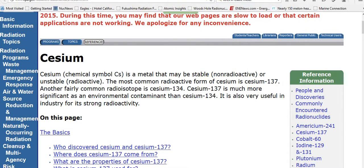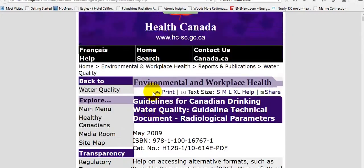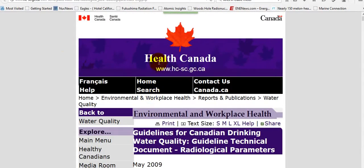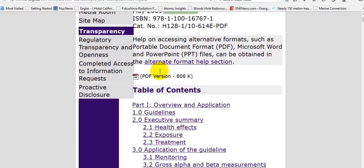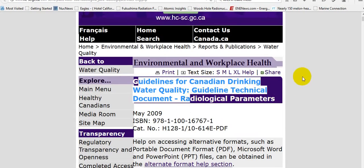This is extraordinary, folks. Trust me, stay with me. Trace cesium detected by levels far below the limits for safe drinking water. Let's go look at safe drinking water for Canada. This is Health Canada, and you'll find links below the video.